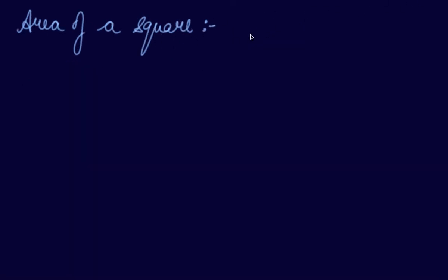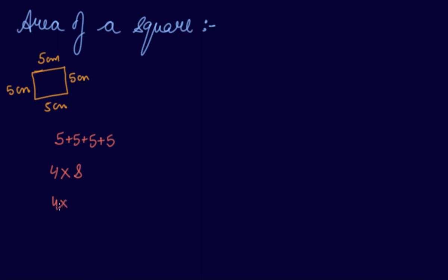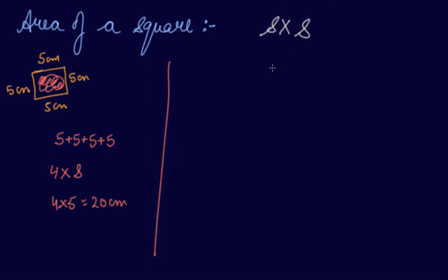Now the area of the square. A square is a figure which has all 4 sides equal — 5 centimeter, 5 centimeter, 5 centimeter, and 5 centimeter. To find the perimeter of the square, it is 4 into side, so 4 into 5 is 20 centimeters. But to find the area of the square, the formula is side into side. So 5 into 5 is 25 centimeter square, which is the area of the square.